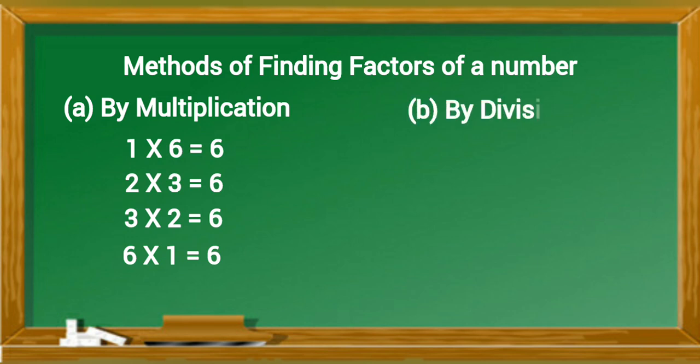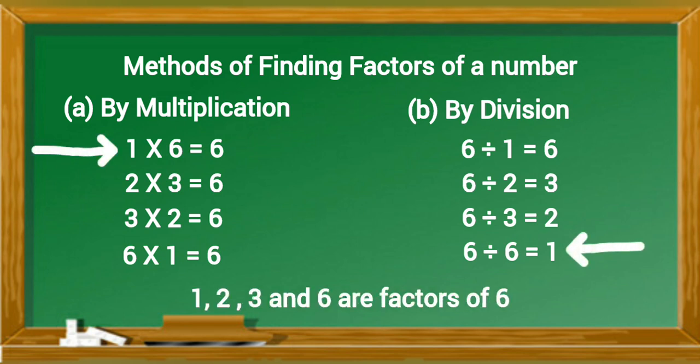B. By division: 6 divided by 1 equals 6, 6 divided by 2 equals 3, 6 divided by 3 equals 2, 6 divided by 6 equals 1. 1, 2, 3 and 6 are factors of 6.